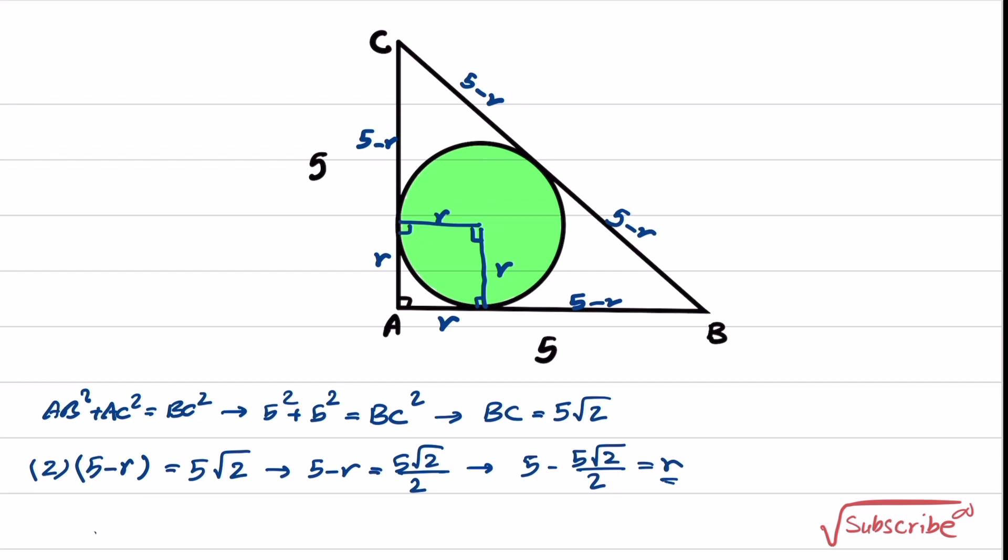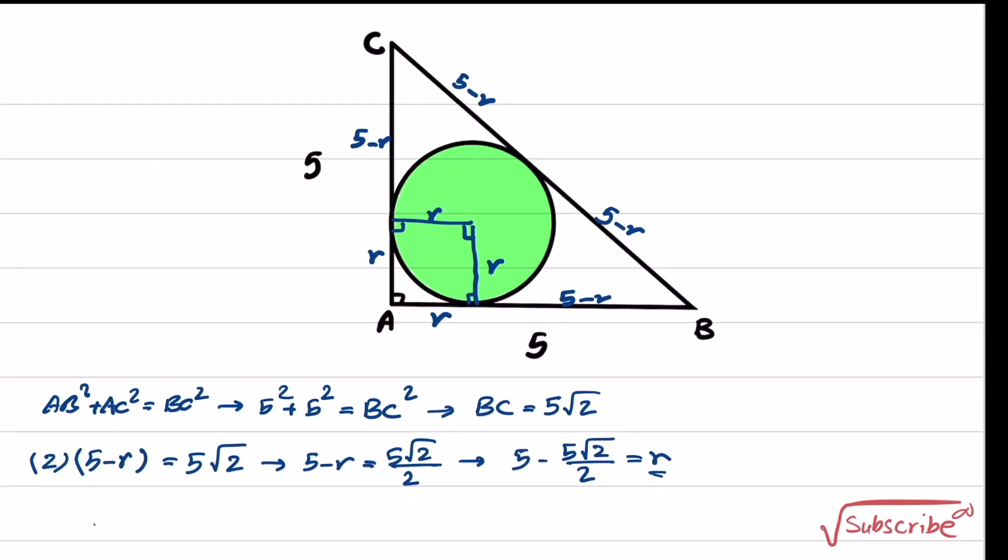After we obtain the radius, calculating the area of a circle is simple. So the S of the circle will be equal to π times r squared. And it will be π times (5 minus 5 times square root of 2 over 2) squared. This is the final answer.